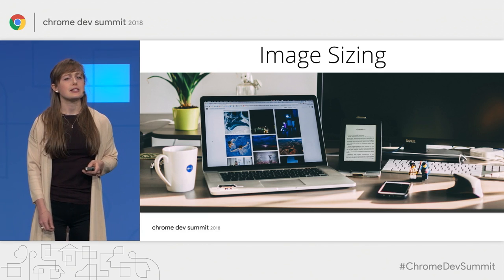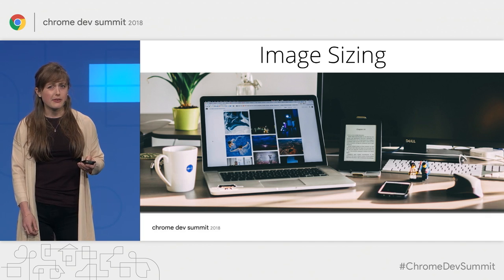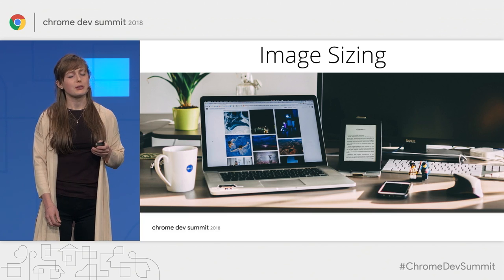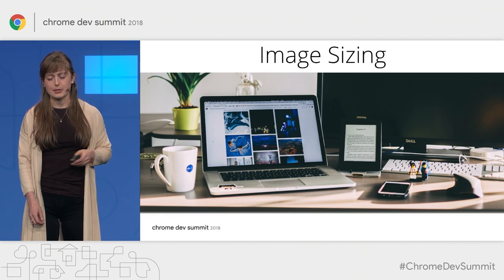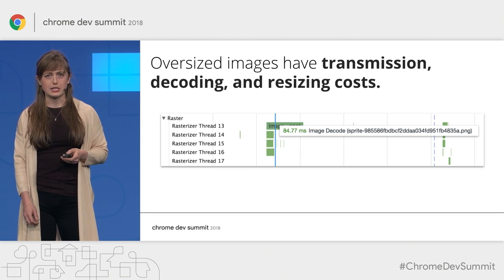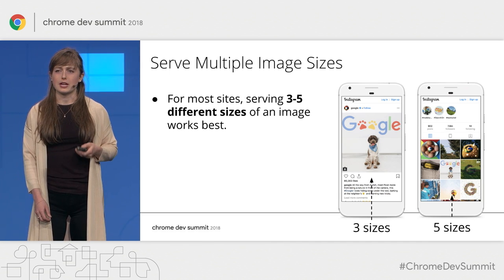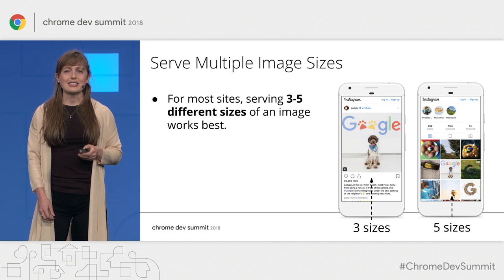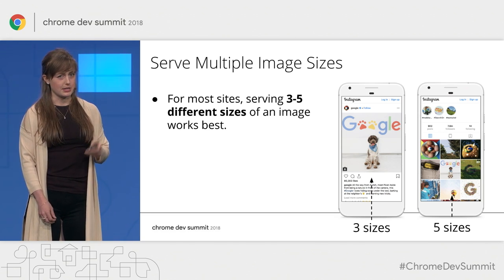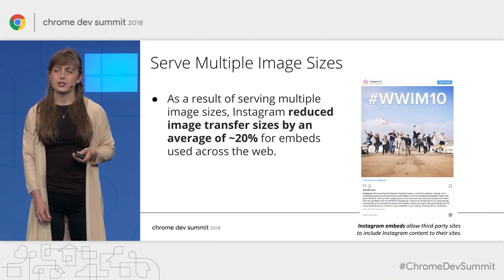Image sizing is something I think many sites could be doing a much better job at. We have so many types of devices, and specifically sizes of devices, that access the web these days, however we insist on serving them all the exact same size of image. Not only does this have transmission costs, but it also creates additional work for the CPU. The solution is to serve multiple sizes of an image — most sites find success serving anywhere from three to five sizes. In fact, this is exactly what Instagram does.